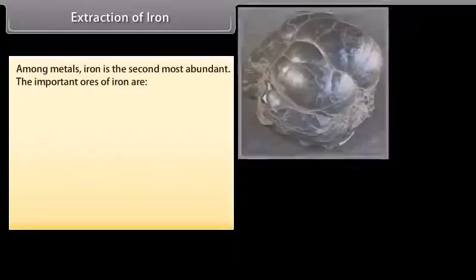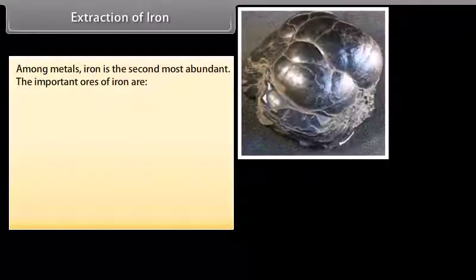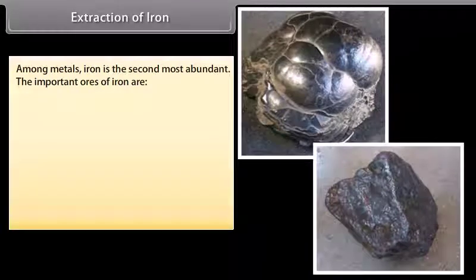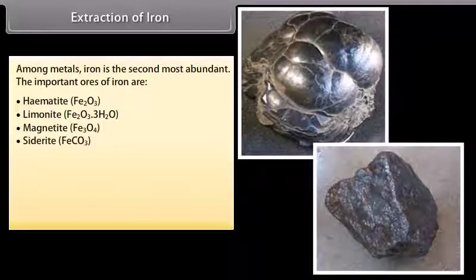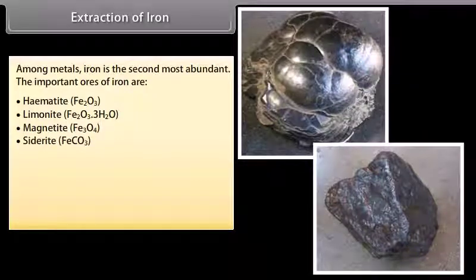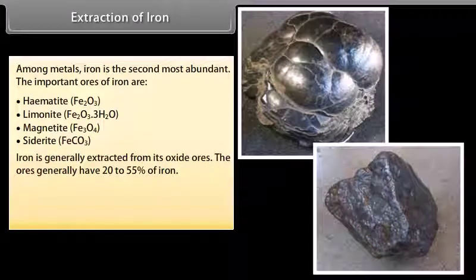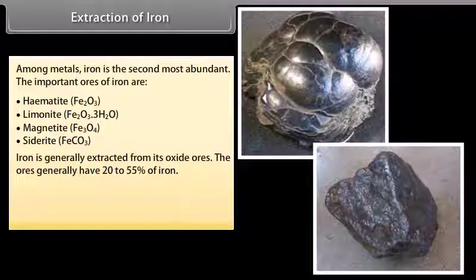Extraction of Iron. Among metals, iron is the second most abundant. The important ores of iron are hematite or red iron ore, limonite or brown ore of iron, magnetite and siderite. Iron is generally extracted from its oxide ores. The ores generally have 20-55% of iron.